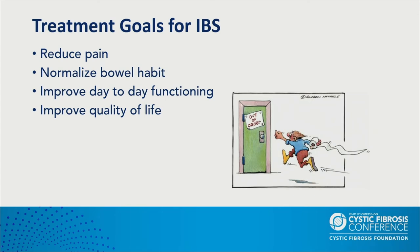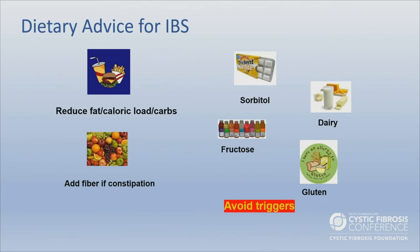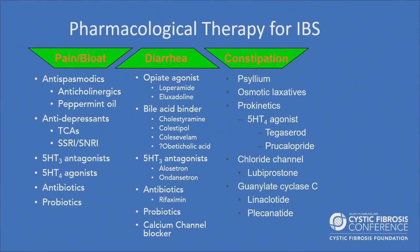Our CF population meets criteria for IBS based on Rome criteria, though those criteria are based on a non-CF population. Our treatment goals are likely the same: improving quality of life by reducing pain, normalizing bowel habits, and improving day-to-day functioning. For general IBS management, we look at reducing fat, caloric load, or carbohydrates if there is a lot of bloating or diarrhea; avoiding added fiber in constipation; and identifying triggers like sorbitol, fructose, dairy, or gluten via a food or behavioral diary.